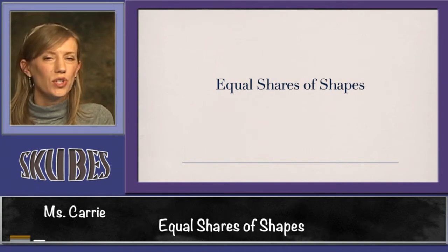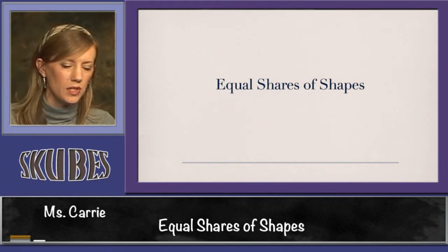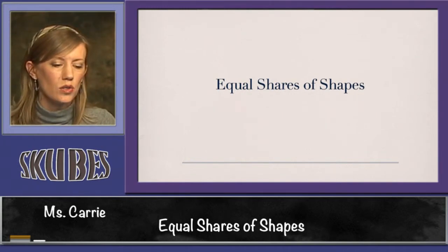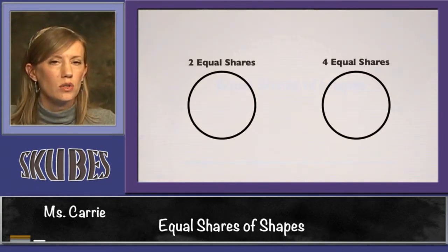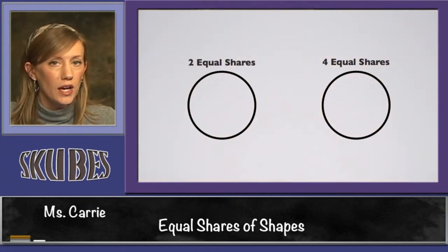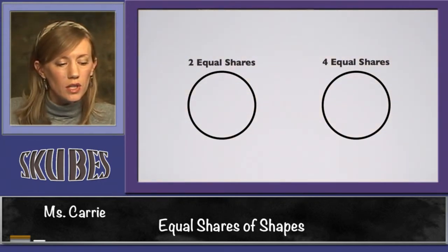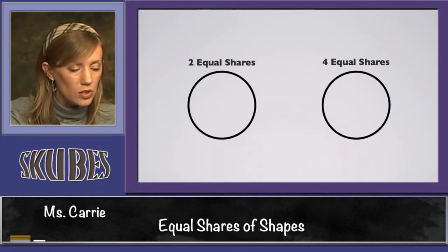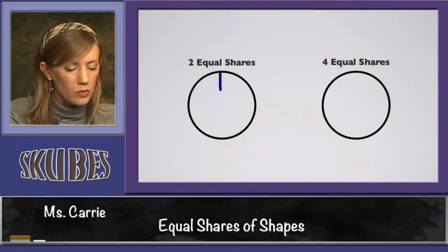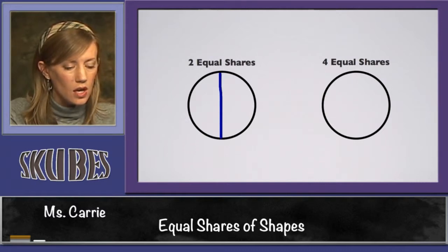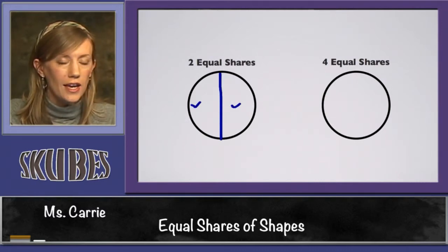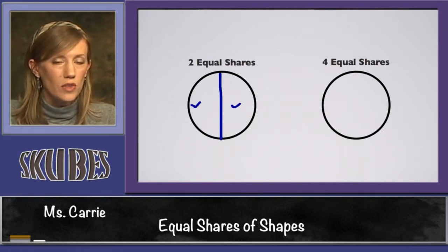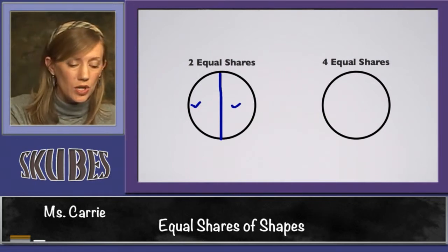This lesson is on equal shares of shapes. Equal shares means that when you divide a shape up, both sides are the same. If we look at this circle and we want to divide it into two equal shares, we could draw a line down the middle like this, and we see that this side and this side are the same. This is divided into two equal shares.